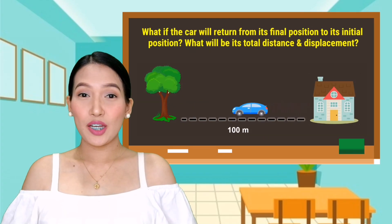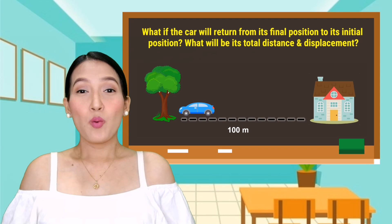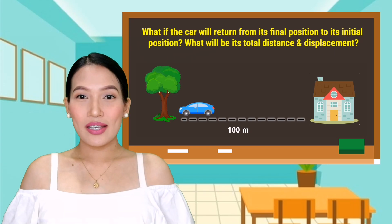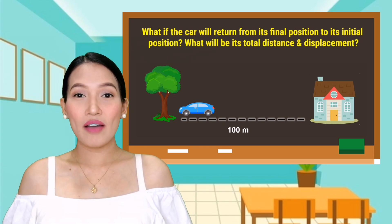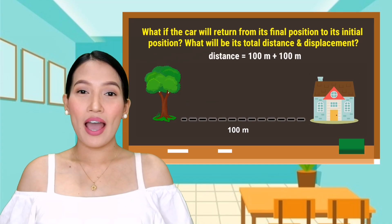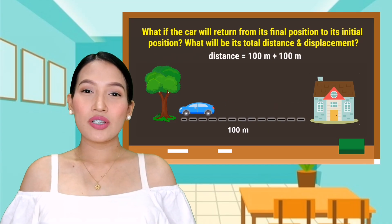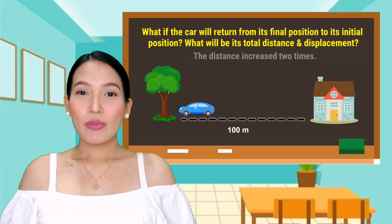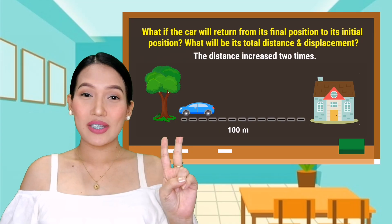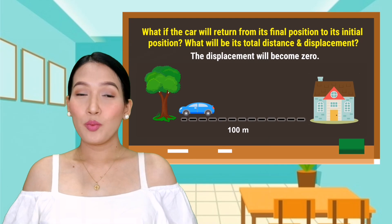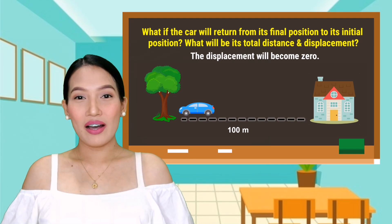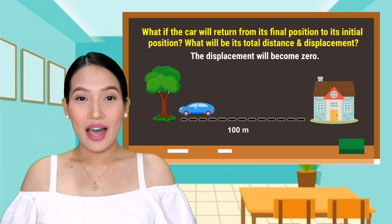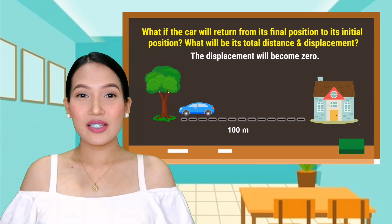What if the car will return from its final position to its initial position? What will be its total distance and what will be its displacement? To get the total distance, you simply add the length of path the car has traveled — 100 meters going to the house plus another 100 meters back, which is 200 meters in total. Therefore, the distance increased two times. However, the displacement of the car will become zero, because the initial position and its final position are just the same, so we cannot measure the shortest distance between them.